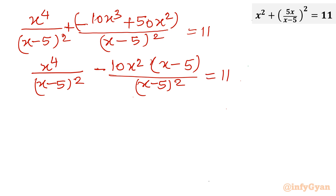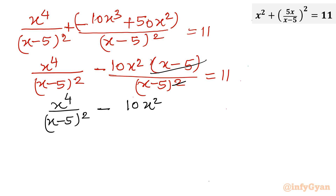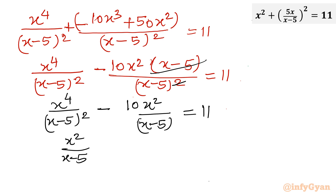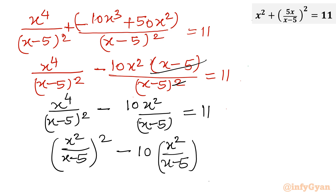You can see we can cancel (x-5) with (x-5) in the denominator. What is left: x⁴/(x-5)² minus 10x²/(x-5), and the right hand side is 11. You can see this is x²/(x-5) whole squared, minus 10 times x²/(x-5), equal to 11.